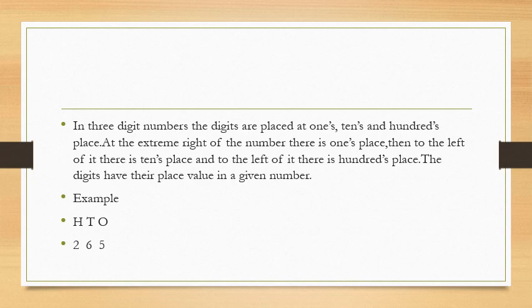Now children, let us understand what is a three-digit number. In three-digit numbers, the digits are placed at ones, tens, and hundreds place. At the extreme right of the number there is the ones place, then to the left of it there is the tens place, and to the left of it there is the hundreds place. The digits have their place value in a given number.